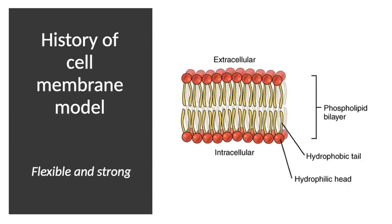The hydrophilic heads of phospholipids love water, while the tails made of fat are hydrophobic. Since both the extracellular environment outside the cell and the intracellular environment inside are mostly water, the hydrophilic heads are attracted outward and inward toward both sides. The hydrophobic tails tend to be in the middle, attracting each other because they hate water — forming a double layer with hydrophobic interactions between them.